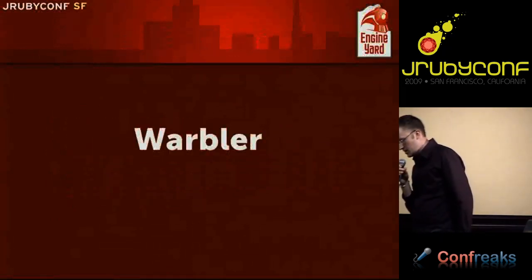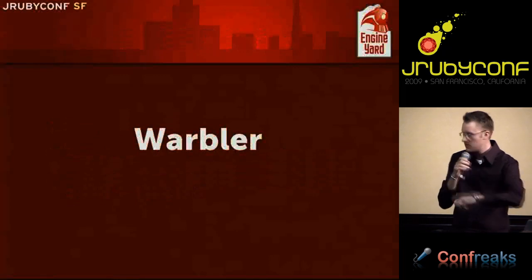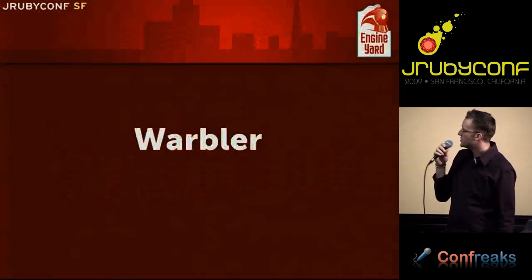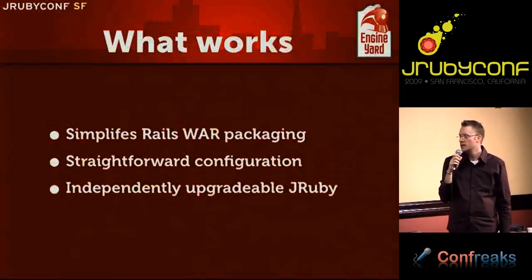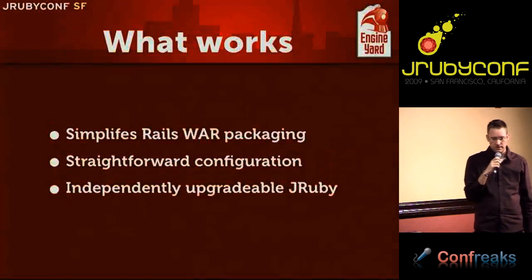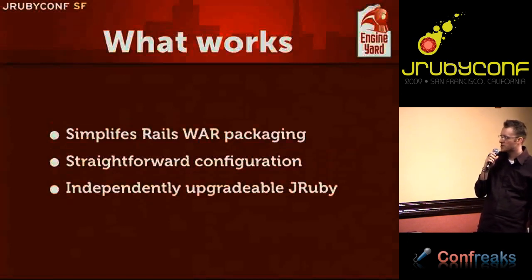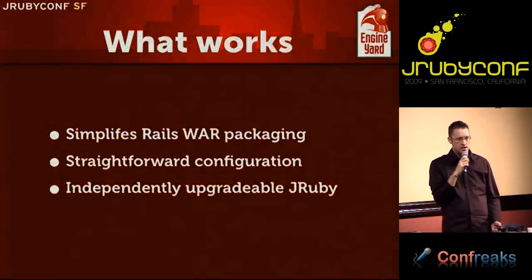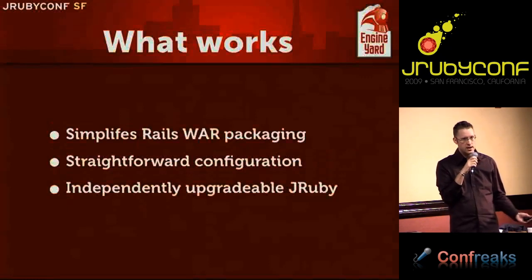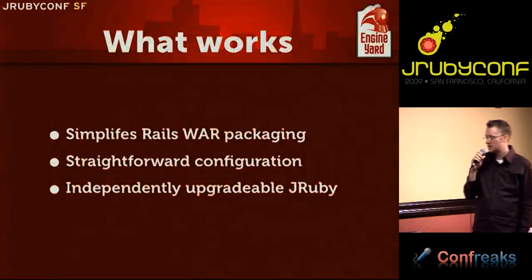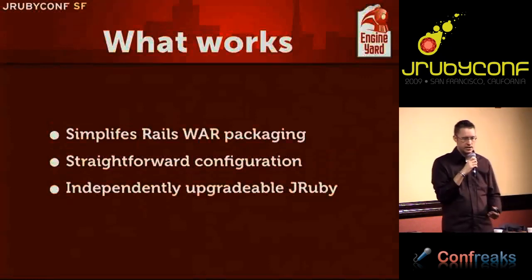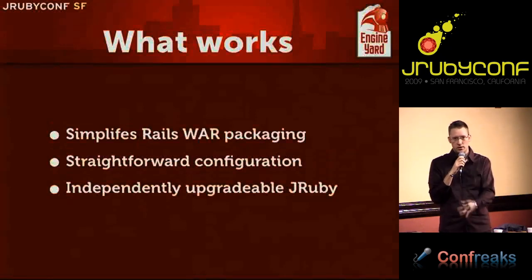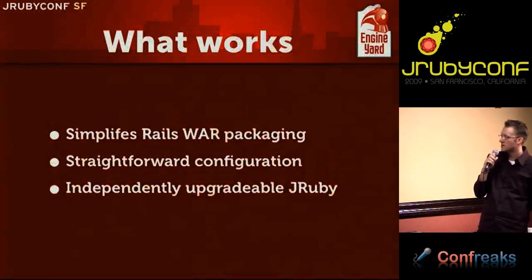The next item is Warbler. What works: it makes building a WAR of a Rails application a breeze. It's pretty straightforward to configure — in the happy path case I didn't have to do any custom config. We've also recently extracted out a separate gem that contains just JRuby itself, so when you upgrade Warbler you can upgrade JRuby independently, and the JRuby JAR file in your WAR can be versioned separately.